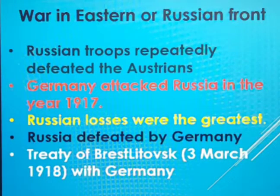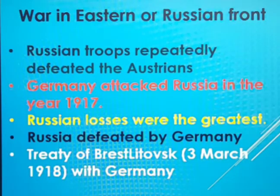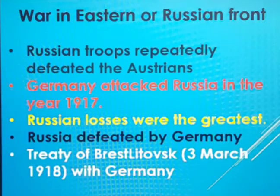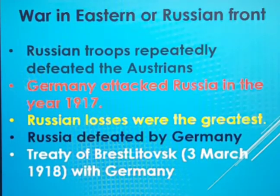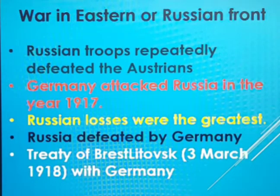After the Russian Revolution, Lenin became the leader of the Communist Party of Russia. Russia had suffered heavy losses and to come out of that problem, Lenin wanted peace. So Russia signed the Treaty of Brest-Litovsk in the year 1918 with Germany. After the Treaty of Brest-Litovsk, Germany became more powerful. At this time, only the USA had helped the allied powers.